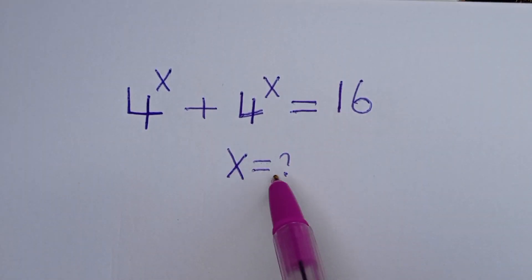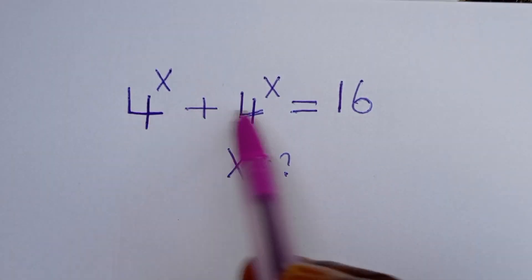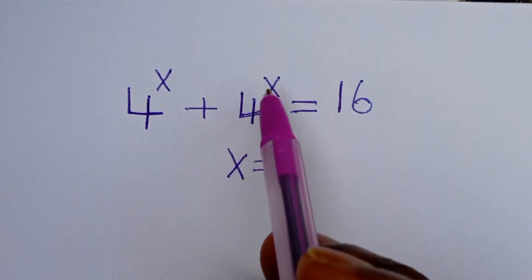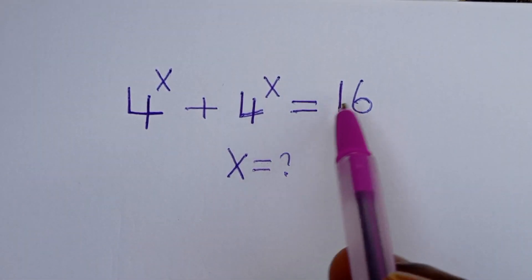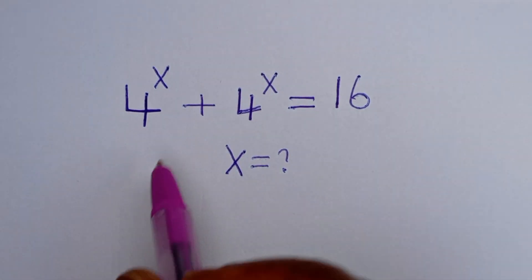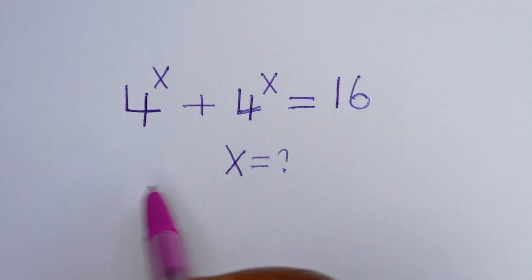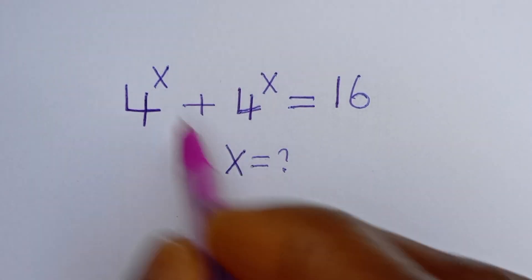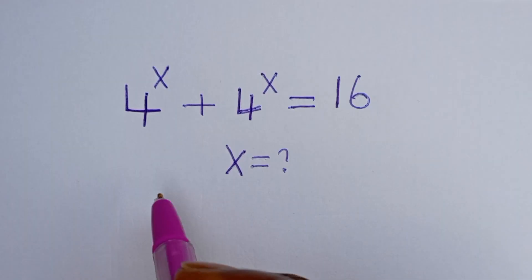Hello. How to solve for s in this equation: 4 to the power of s plus 4 to the power of s is equal to 16. Let's see here — 4 to the power of s is common, let's bring it out.